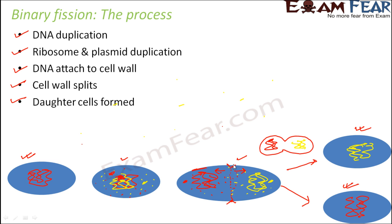As the cytoplasm starts to separate, a ring-like structure forms at the center of the cell. This ring gradually becomes shorter and shorter until it completely divides the cell. This forms a septum, and due to the formation of this septum, two daughter cells are finally produced.